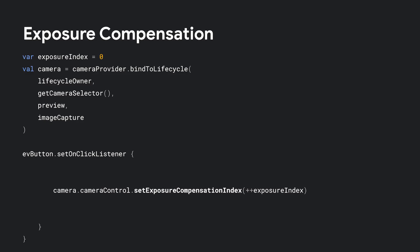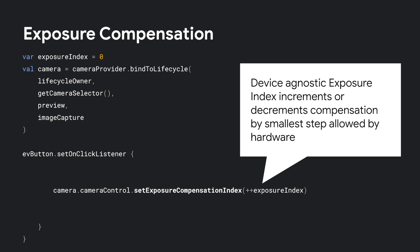Here is an example of using exposure compensation. First, we create a variable to track the exposure index value. Then, we bind an image capture and preview to a lifecycle using some camera selector. In a UI event such as a button click, we can call setExposureCompensationIndex on the camera control for the returned camera and give it our desired index setting. The exposure index is a device-agnostic number that increments or decrements the exposure value by the smallest step allowable by the hardware, allowing it to work similarly across different devices.